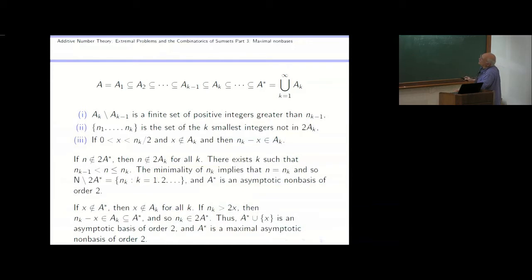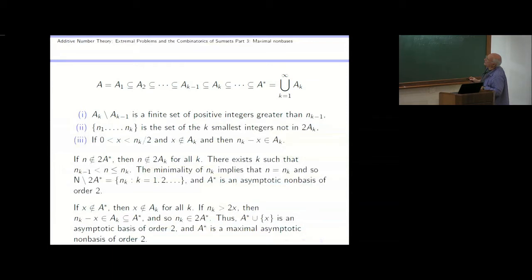You have this increasing sequence of sets with these three properties. The first thing I want to show is: if I let A* be the union of all these sets, this is a non-basis, and in fact the numbers not in the sum set are precisely the numbers in the sequence N_1, N_2, and so forth.